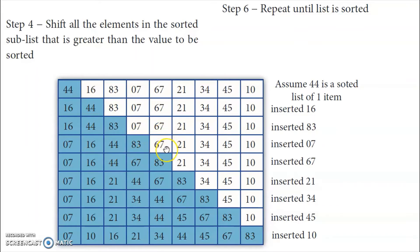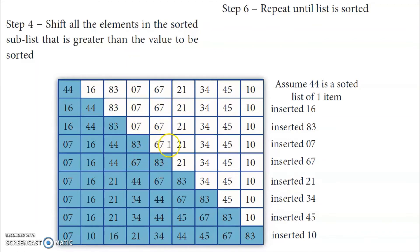After four items are sorted, the next item is 67. We insert 67 into its position in the sorted sublist by comparing from the first position. Comparing with 7 — 67 is bigger. 16 — bigger. 44 — bigger. Then 83 is compared — 67 is smaller than 83. So 67 is inserted before 83. All elements from that position shift one place. 83 gets updated to the next position. Now the first five elements are sorted.